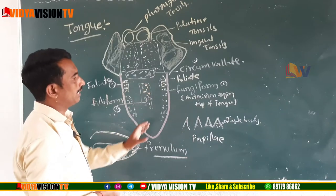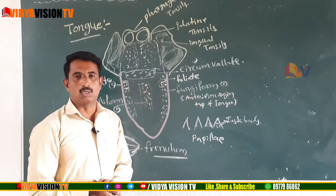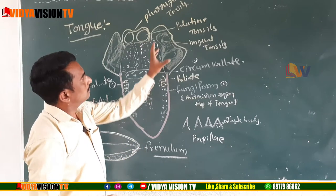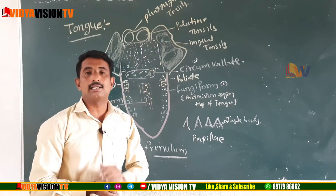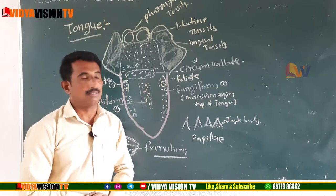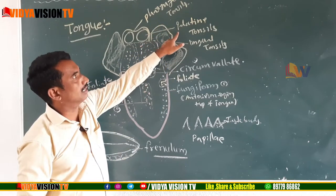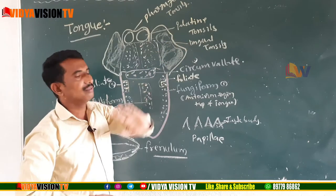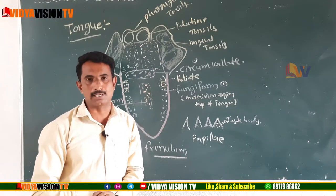Three types of tonsils are also present on the posterior side of the tongue: pharyngeal tonsils, palatine tonsils, and lingual tonsils.